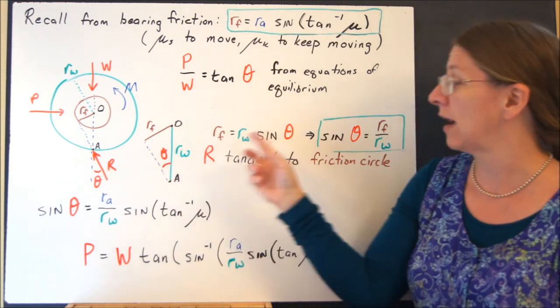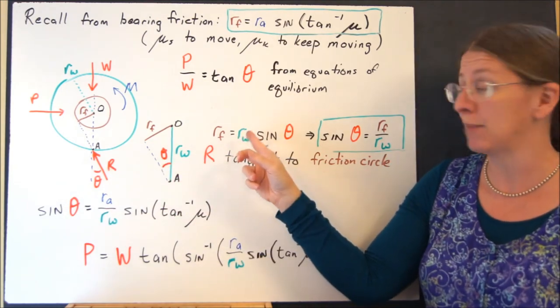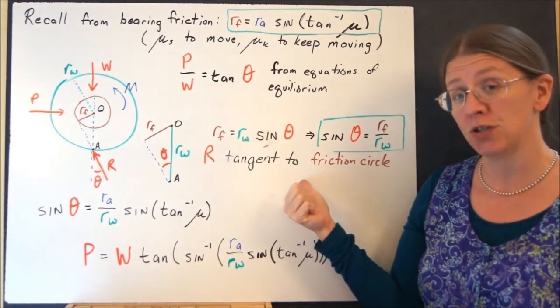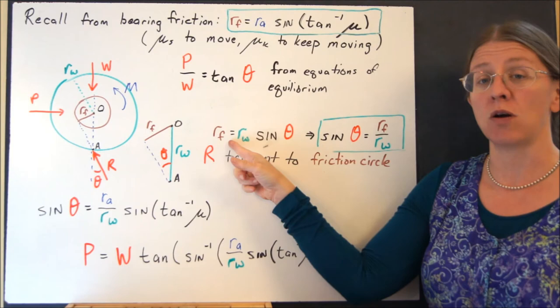I will only have R acting at a distance. Well, what is the distance R acting? R acting at the same Rf, the same friction circle. And R is still tangent to that friction circle. Your perpendicular distance is Rf.